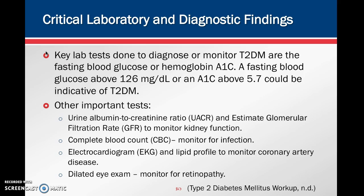Critical labs and diagnostic findings include checking a fasting blood sugar or hemoglobin A1C, which are the main labs drawn to look for and monitor type 2 diabetes. A fasting blood glucose above 126 or an A1C above 5.7 can be indicative of type 2 diabetes. Other important tests include the urine albumin to creatinine ratio and estimated glomerular filtration rate, or GFR, both used to monitor kidney function.